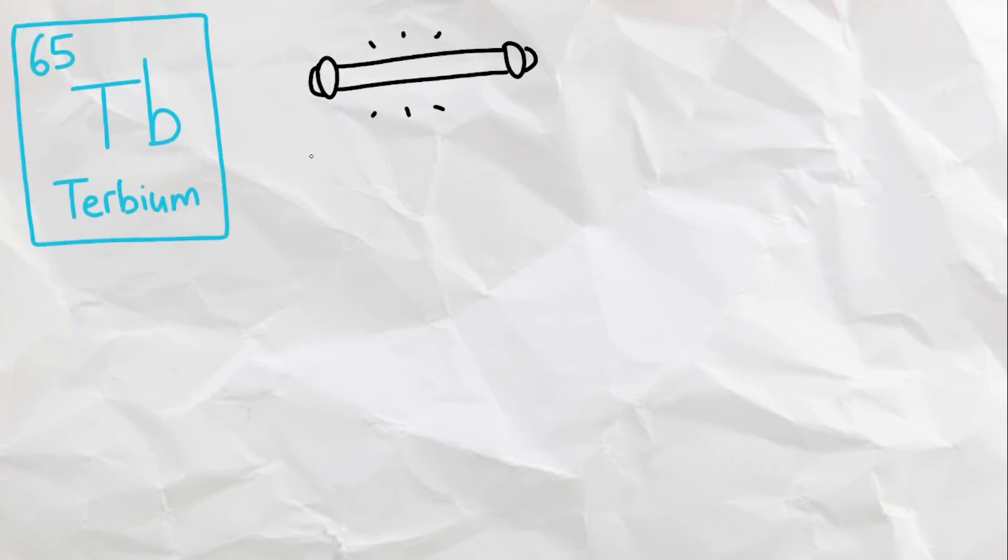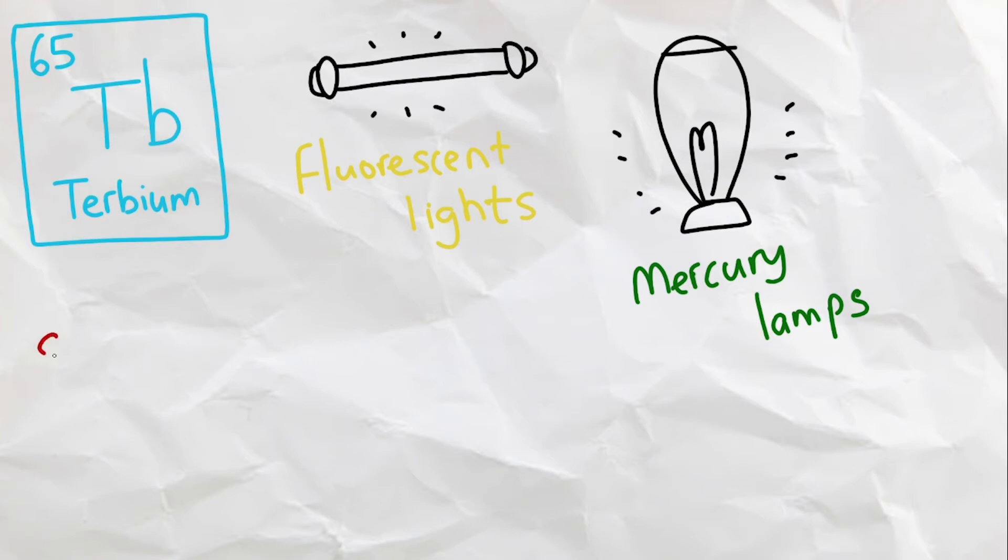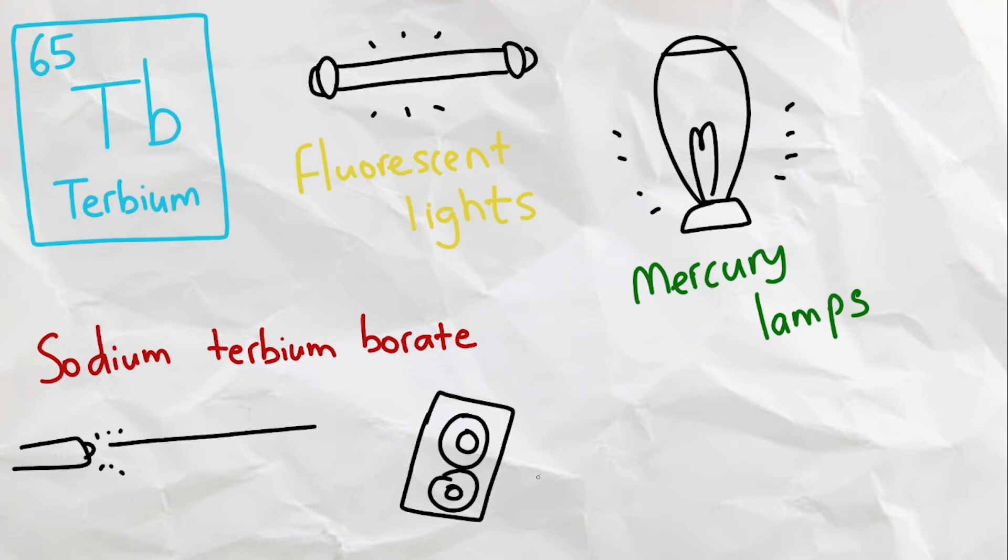Next we have Terbium, a soft metal that is used in fluorescent lights and mercury lamps. Sodium-Terbium-Borate is a compound that is used to make laser lights inside electronics, including loudspeakers and computer disks.